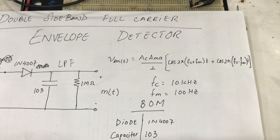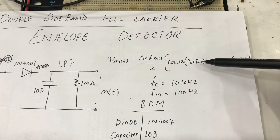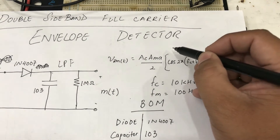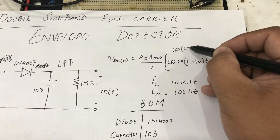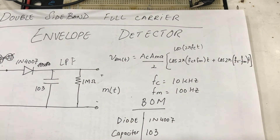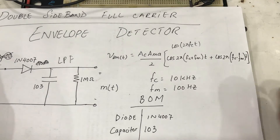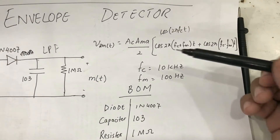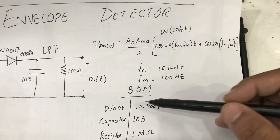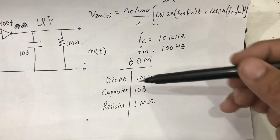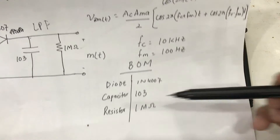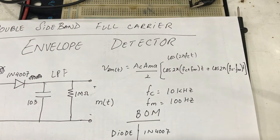To recap: my amplitude modulated full carrier signal has an FC plus FM component, plus the carrier signal — these are the components present. Two things to notice about my circuit: I have a carrier frequency chosen to be 10 kilohertz and a modulating frequency of 100 hertz. The bill of materials is quite minimal — only three components: a diode, a capacitor, and a resistor.